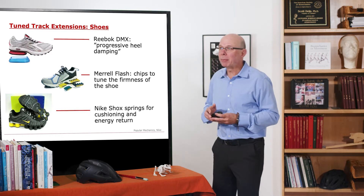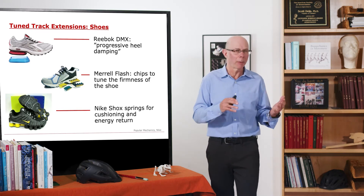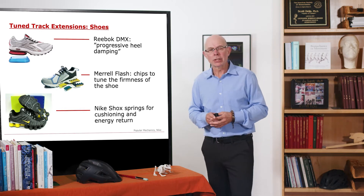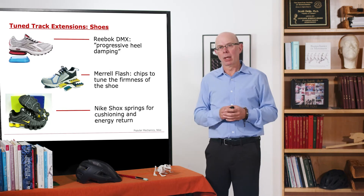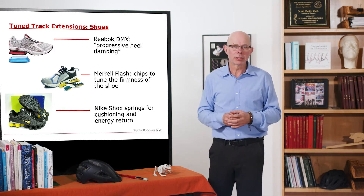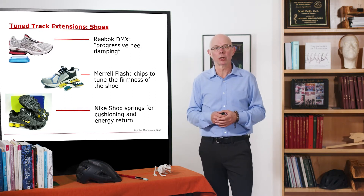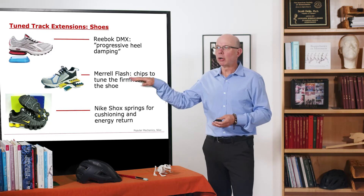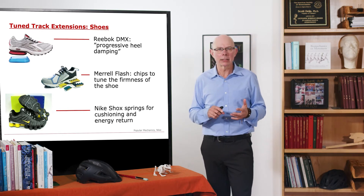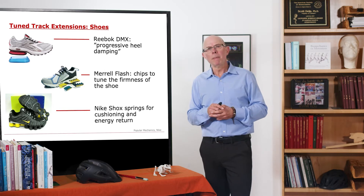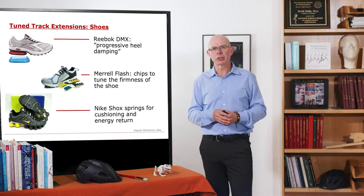Her prosthesis has dynamics that are tuned to absorb energy during the early stance phase of running, and then that stored energy is delivered lifting her body and propelling it into the air during the second part of the stance phase. Almost every shoe manufacturer has attempted to optimize shoe mechanics to improve performance. For example, Reebok has a progressively damped heel, which removes energy from the system — this might decrease performance but could help soften heel impact. Merrill has used a method to tune the firmness of the shoe, which is appealing because you may want to adjust stiffness to train at various speeds or for subjects of different mass.